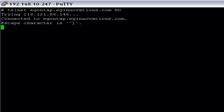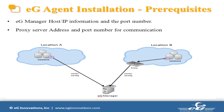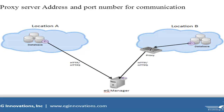EG uses HTTP or HTTPS protocol for communication. We also have to make sure EG Manager is using SSL for communication. The next consideration is proxy server information. EG uses HTTP or HTTPS for communication, and in some infrastructures proxy servers are used. As shown in the example picture, the server in location A communicates with the EG Manager directly, but in location B the server uses a proxy for secured communication.